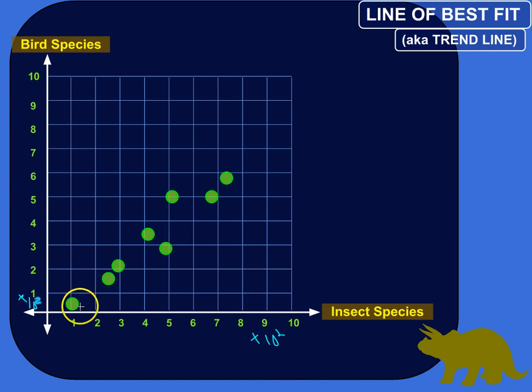So these numbers represent 100 species. That's what this times 10 squared means. So I go to one island and I find maybe a little over 100 insect species and something like maybe 30 or 40, maybe around 50 bird species.